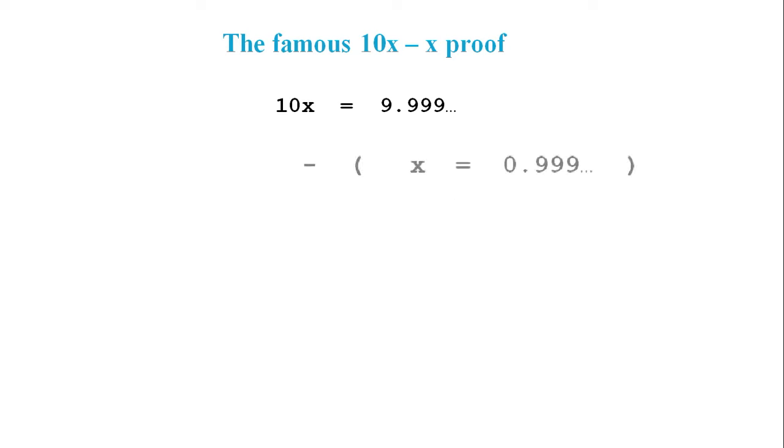Then we take away what we started with, and on the left-hand side we get 10x minus x is 9x, and on the right-hand side we get 9.9 recurring minus 0.9 recurring equals 9.